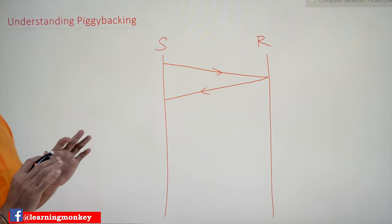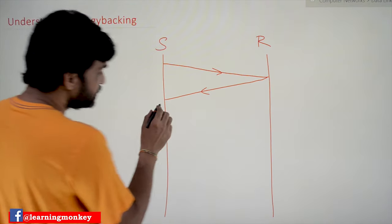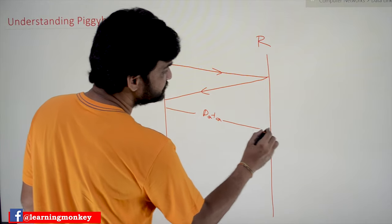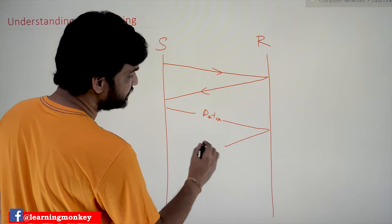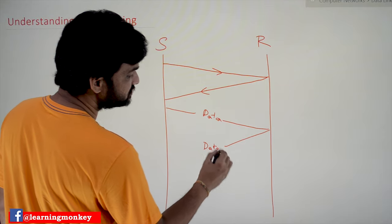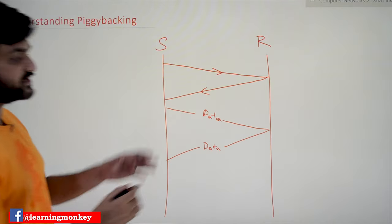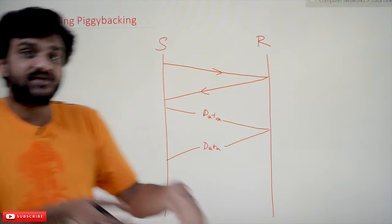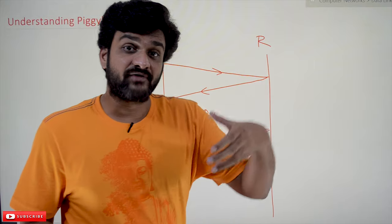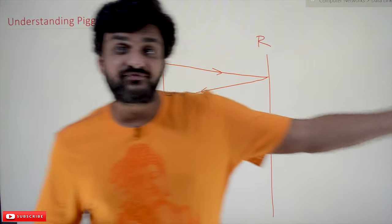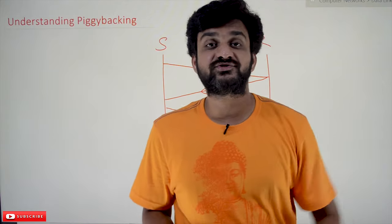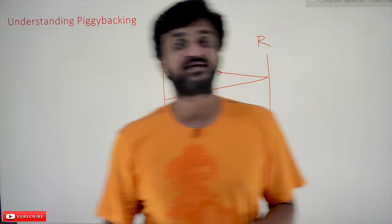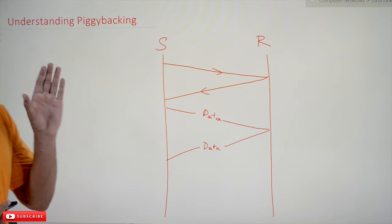But in the real world, data frames are transferred between both the sender and the receiver. The sender sends data, and in response the receiver also sends data back. This is what we call bidirectional communication. In this kind of communication, the protocols we discussed earlier use a concept called piggybacking.